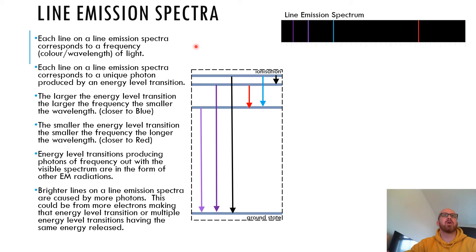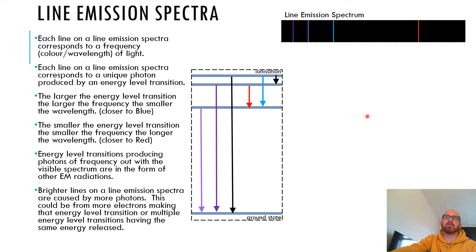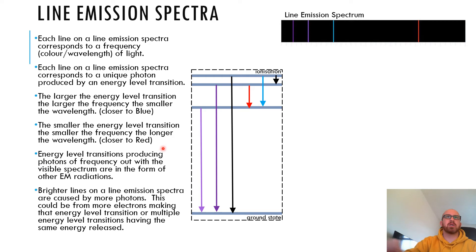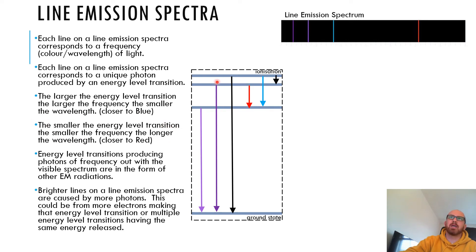Line emission spectra are only for light, and photons produced might not always be in the visible range — they might be other EM waves. Each line corresponds to a unique photon produced by an energy level transition. The larger the energy level transition, the larger the frequency, the smaller the wavelength — closer to the blue or violet end. The smaller the energy level transition, the smaller the frequency, the longer the wavelength — closer to the red end. Some transitions produce black lines on the emission spectrum, and there are six transitions but only four coloured lines.